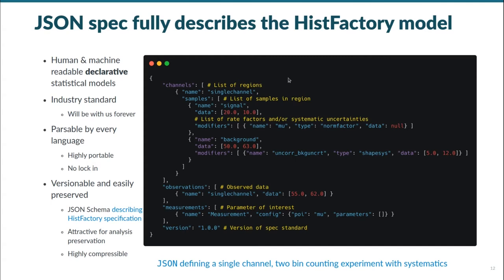Given our coverage of the HistFactory formalism, we see that we have a list of channels within a list of samples with an associated list of rate factors and systematic uncertainties, as well as the observed data, our declared parameter of interest, and the schema version. So all of HistFactory is represented here, so we have a declarative full serialization of the likelihood.